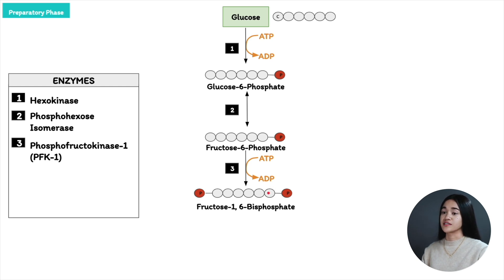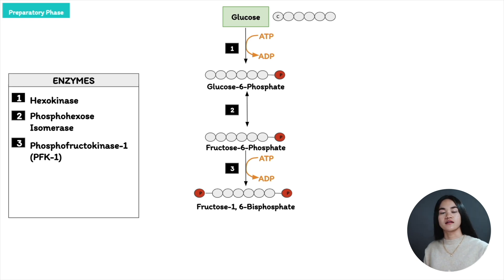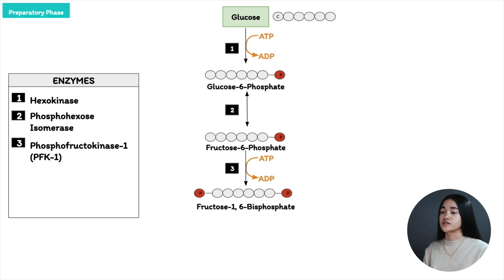PFK1 is allosterically regulated. When ATP levels are low, or there are high levels of ADP and AMP, PFK1 activity increases because we need ATP — so glucose oxidation continues. On the other hand, when ATP levels are high, PFK1 is inhibited because we don't need glycolysis to continue. The cell is signaling that energy is sufficient and glucose oxidation is not needed.